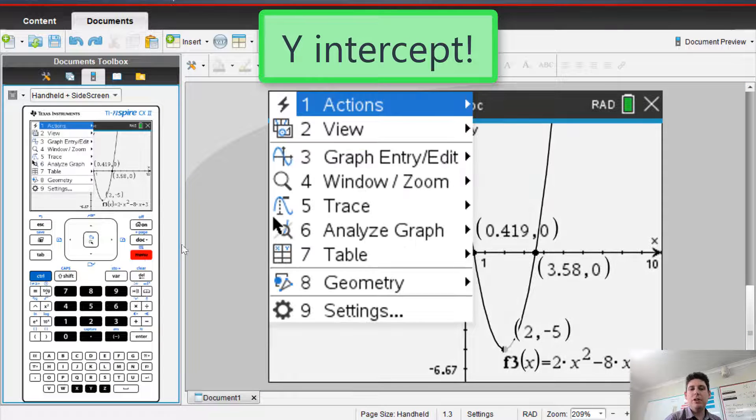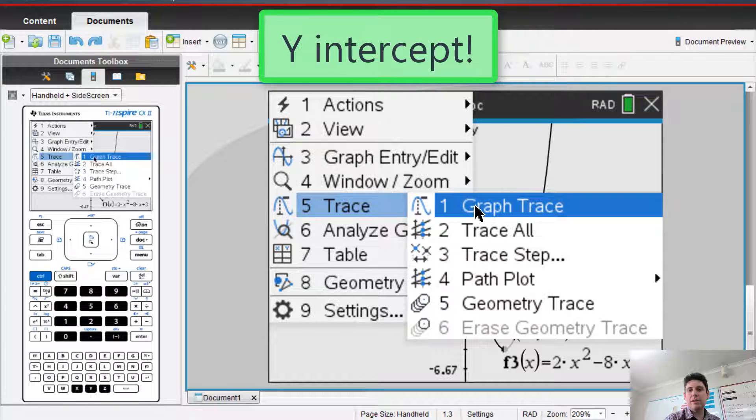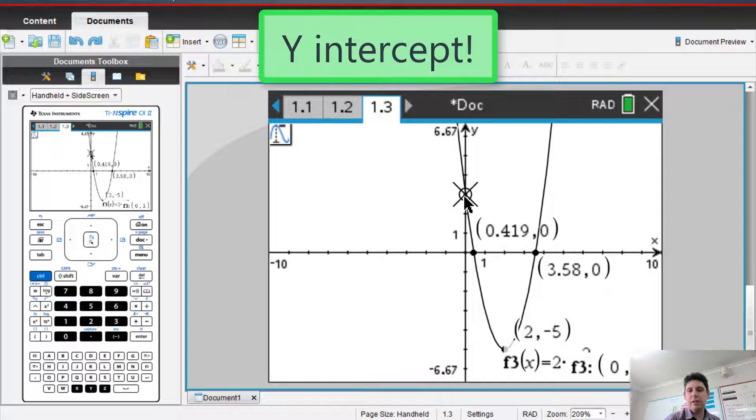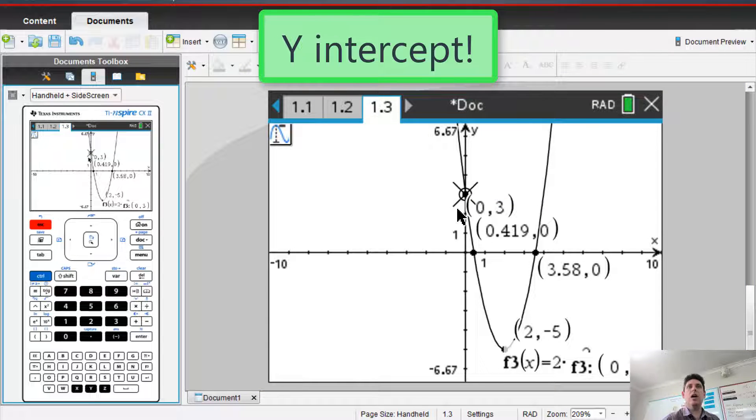Y-intercept. Menu. Trace. Graph trace. And there you go. And now we've got it. All right. Once you've clicked graph trace, you click on the point with the pad. So you're going to scroll the pad and then click.